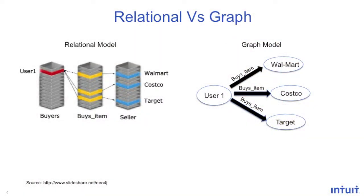Let's look at an example where we model financial transaction data using the relational versus the graph approach. In the relational model, there are three different tables. The first is the buyer table, which has information about the users. The second is the seller or merchants table, which has information about the merchants. The third represents the relationship where a buyer buys an item from a merchant.